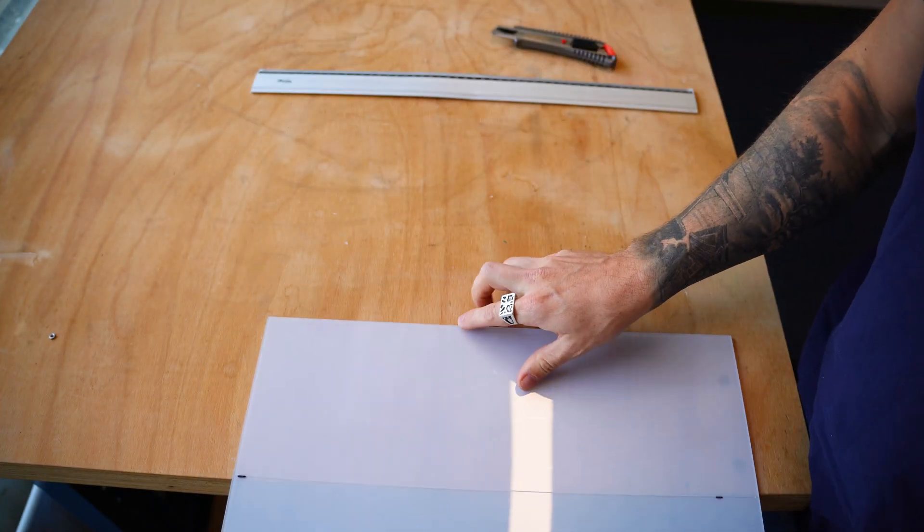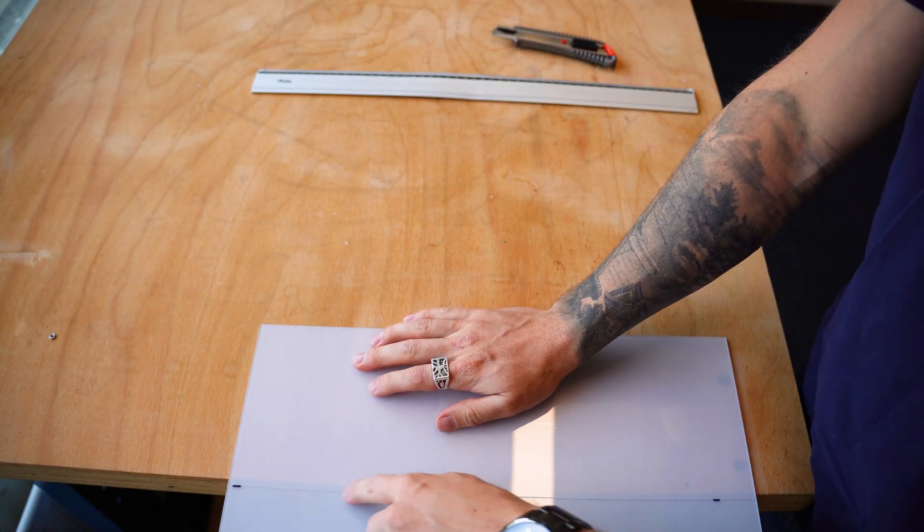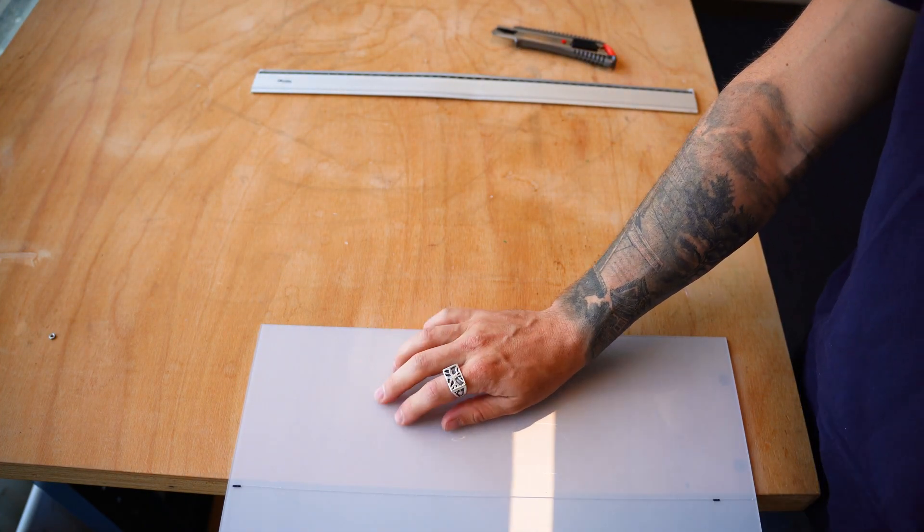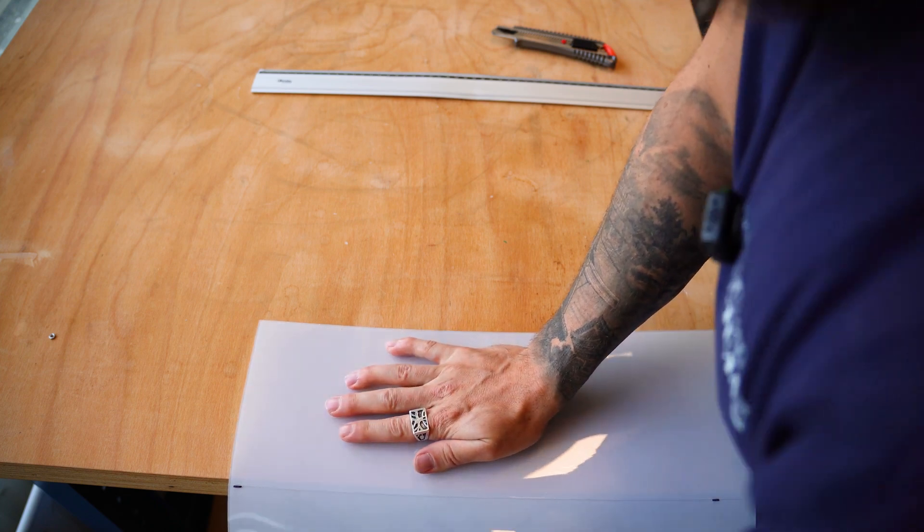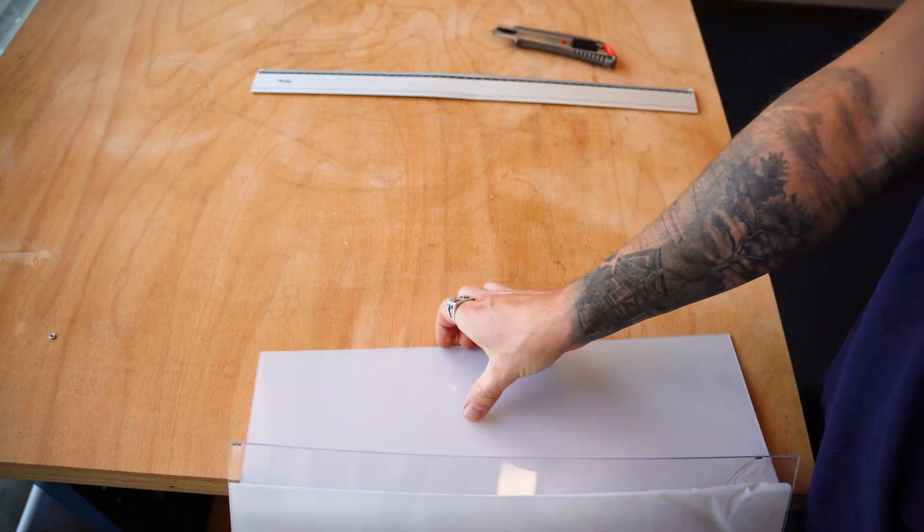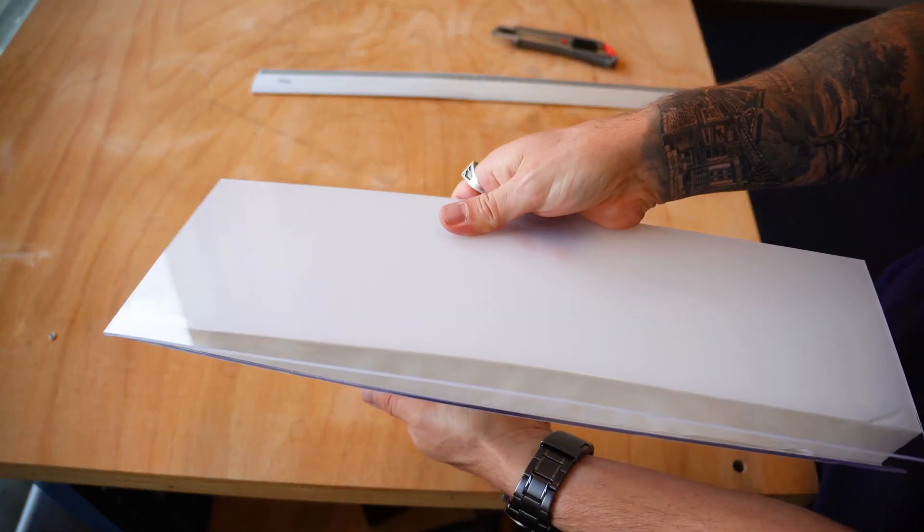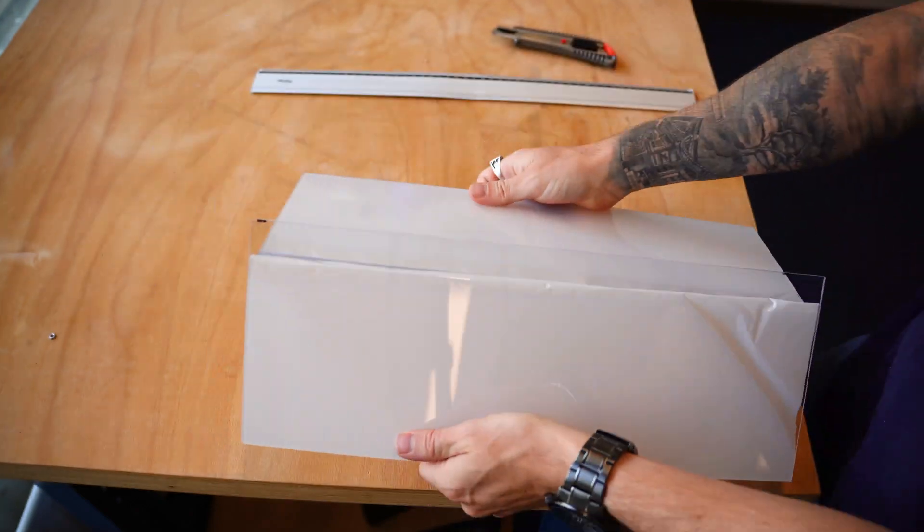To be able to finish this off, all I'm going to do is line my piece up, get my score point along the edge with it facing up. I'm just going to push down. And I've got a nice clean cut right along that score line.